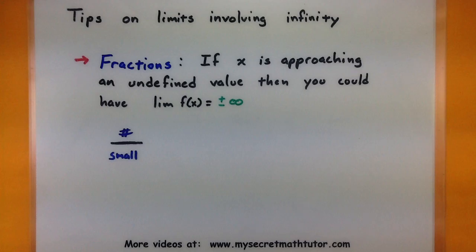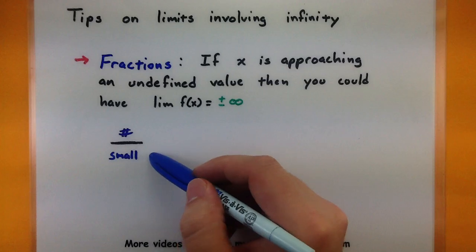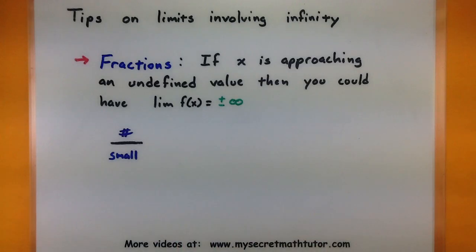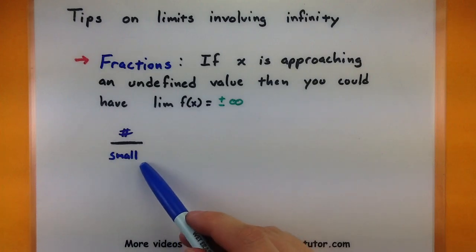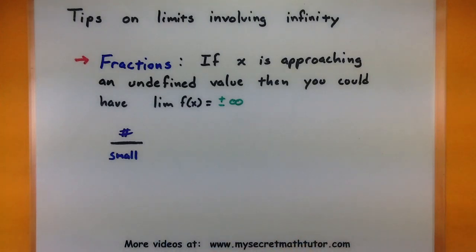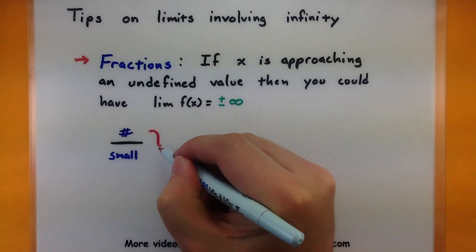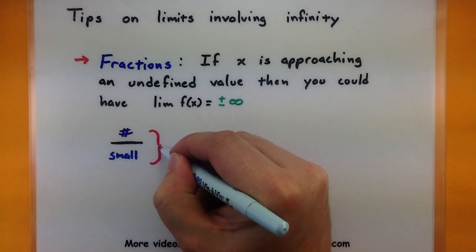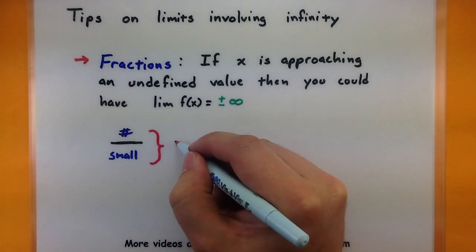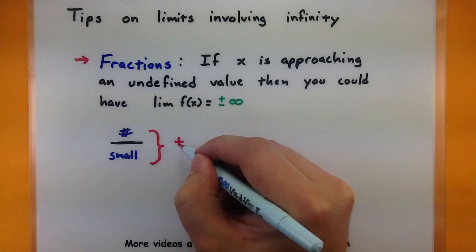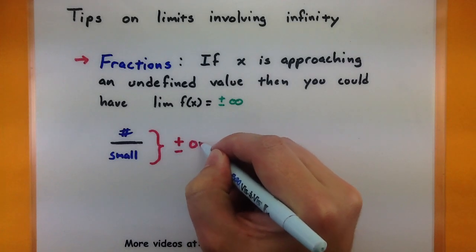Here's how you can usually spot that. If you're looking at your function and you notice there's a fraction in it, and the bottom of that fraction just keeps getting smaller and smaller as x approaches a value, that's your indication that the entire fraction is actually getting larger. So something like this could go towards positive or negative infinity.